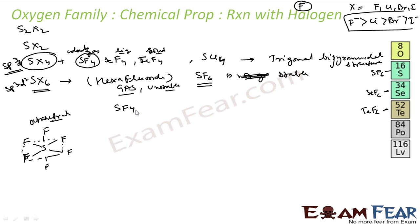And this is easily hydrolyzed by water to form sulfur dioxide and hydrogen fluoride. If we take SF4, you hydrolyze with water, you get sulfur dioxide and hydrogen fluoride. And this sulfur tetrafluoride is used as fluorinating agent.